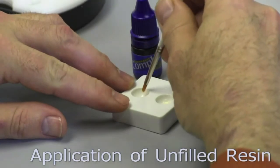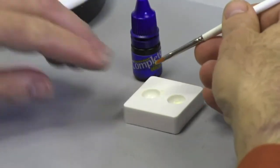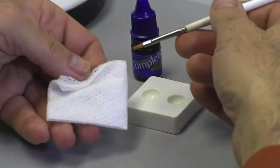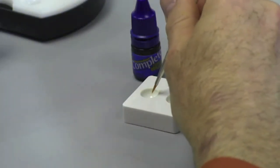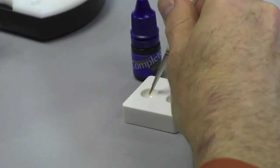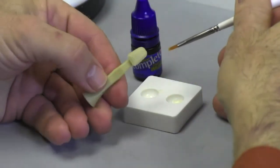It's a nano hybrid product that is versatile and has a great viscosity. I use it a lot in transitional bonding, and we're going to start this exercise by placing some unfilled resin on a shade tab type tooth.